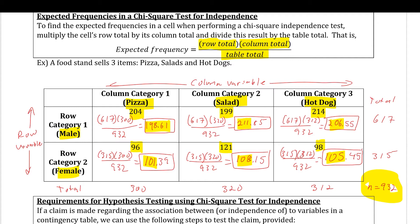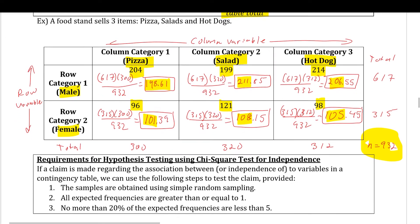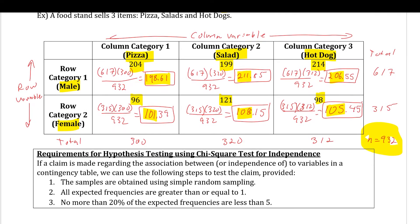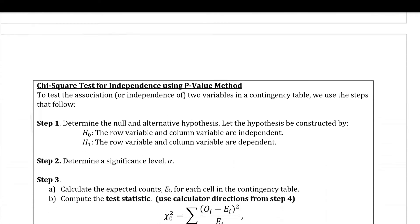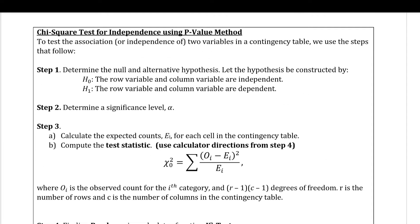Let's go over the six steps for a hypothesis test using the chi-squared test for independence. The requirements are: samples obtained using simple random sampling, all expected frequencies are greater than or equal to 1 (just like the goodness-of-fit test), and no more than 20% of the expected frequencies are less than 5. Step one: the null hypothesis is that the row variable and column variable are independent. The alternative is that the two variables are dependent. It's always in that order.